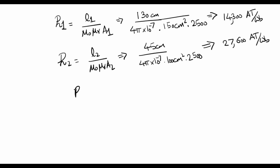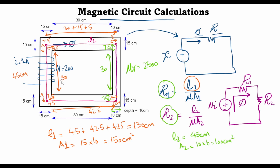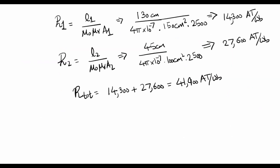We can now sum the two reluctances: the total reluctance = 14,300 + 27,600 = 41,900 ampere-turns per Weber. The magnetomotive force F = N×I = 200 × 1 = 200 ampere-turns.